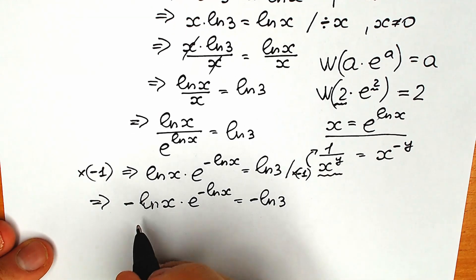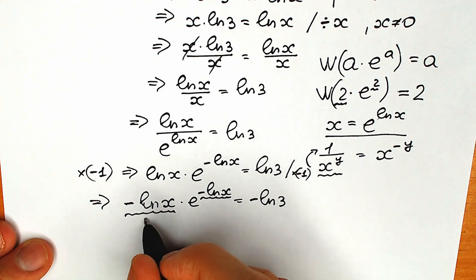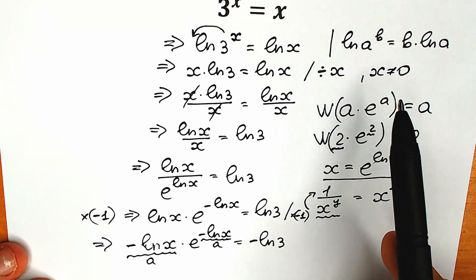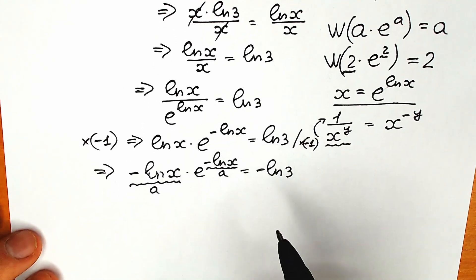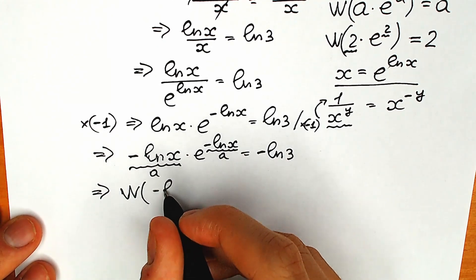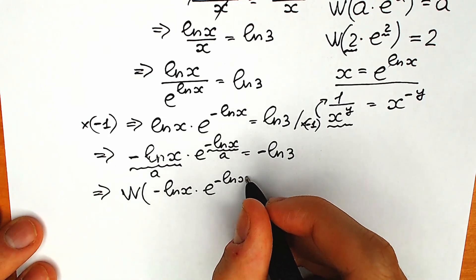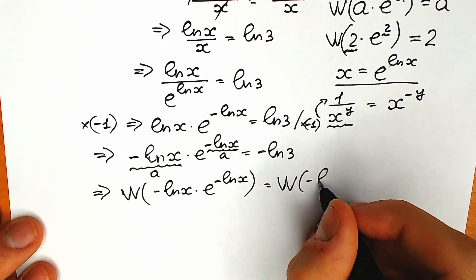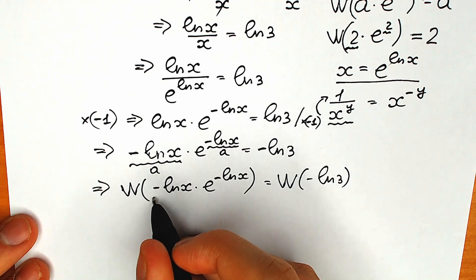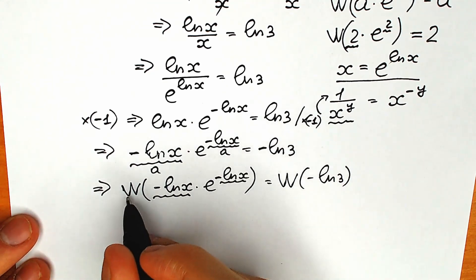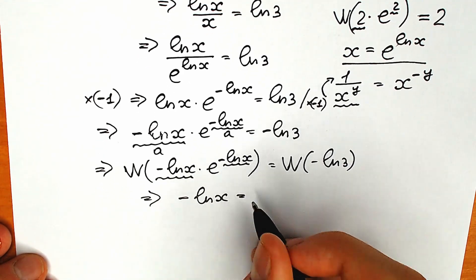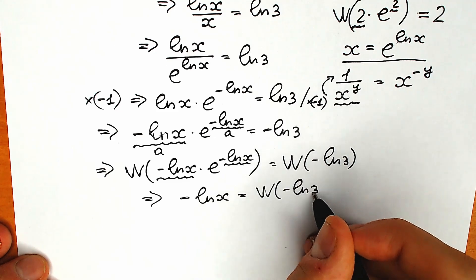Let's look closely. Minus natural log x is here, and minus natural log x is here — this is our a, and that is also our a. So we have the form a times e to the power a, which is exactly what we need. So we can apply the Lambert W function. Lambert W of minus natural log x times e to the power minus natural log x equals Lambert W of minus natural log 3. The left side simplifies to only minus natural log x.